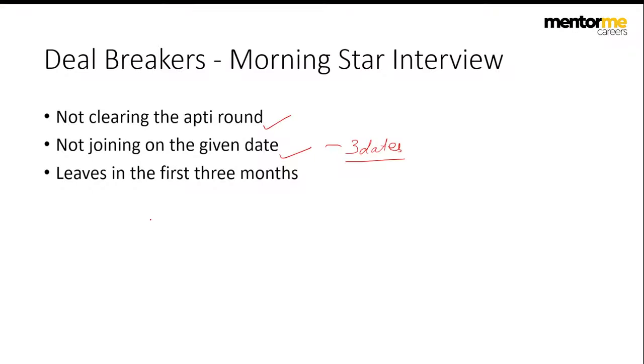I've seen so many candidates rejected because they said they have an exam and can only join later. They won't tell you directly — they'll ask a trap question like 'Do you need any leaves in the coming three months?' and you might say yes because of an exam or event. Don't say that, as it leads to direct rejection. Related to this: don't ask for leaves in the first three months. The first three months is when maximum training happens before you get assigned to a role.